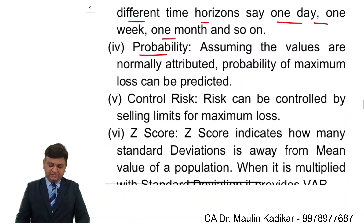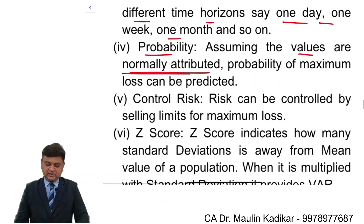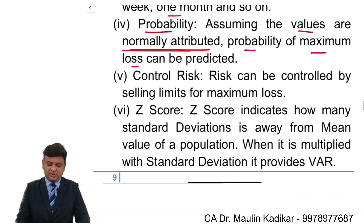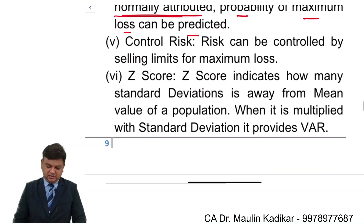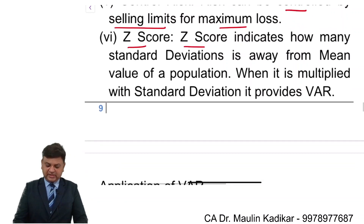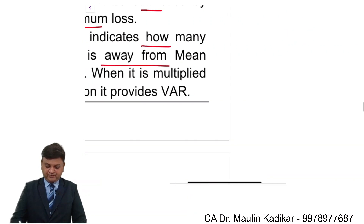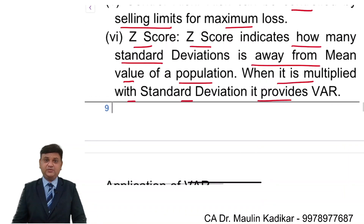Probability: assuming values are normally distributed, the probability of the maximum loss can be predicted with a 99 percent confidence level. Control risk: risk can be controlled by setting limits for maximum loss. Z-score: the z-score indicates how many standard deviations a value is away from the mean of a population. We know that z equals x minus x-bar divided by standard deviation. When multiplied with the standard deviation, it provides the VAR.